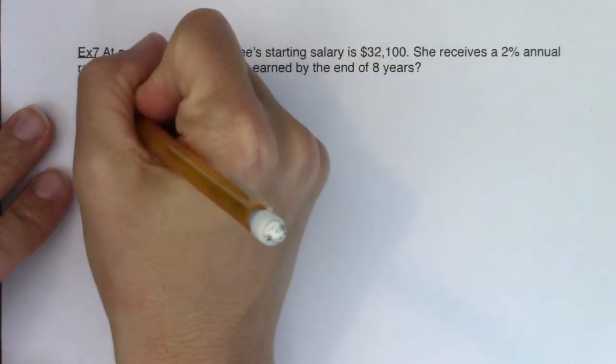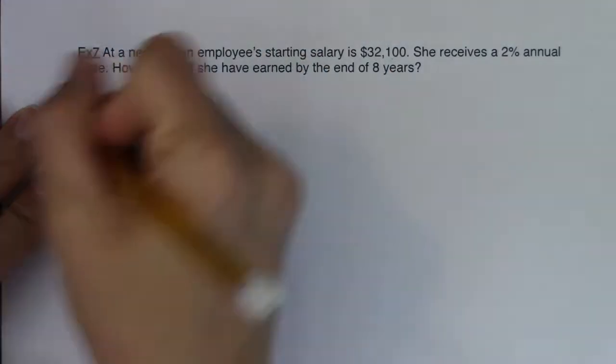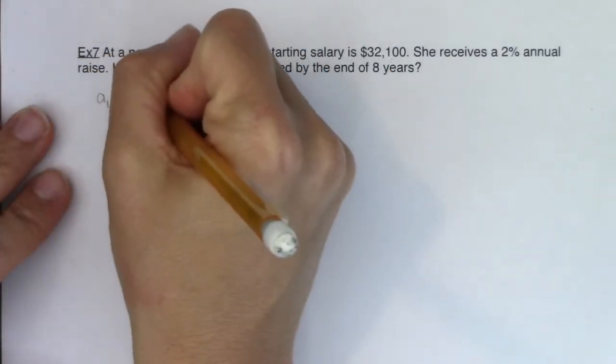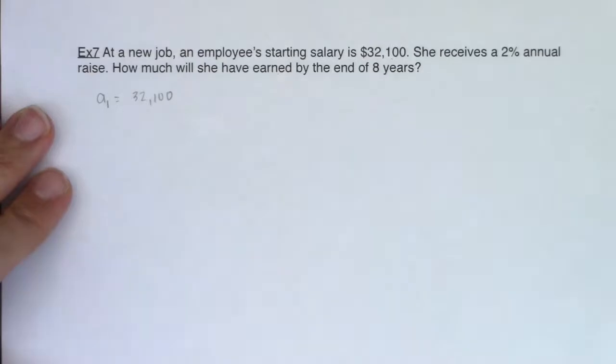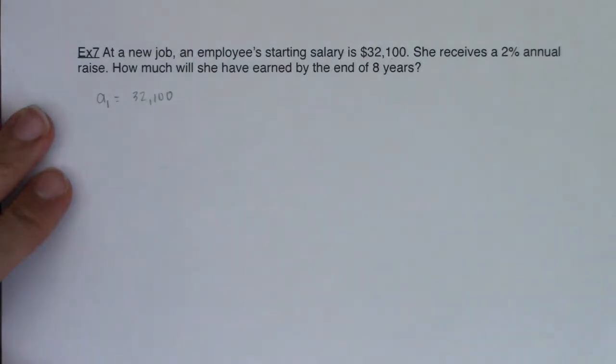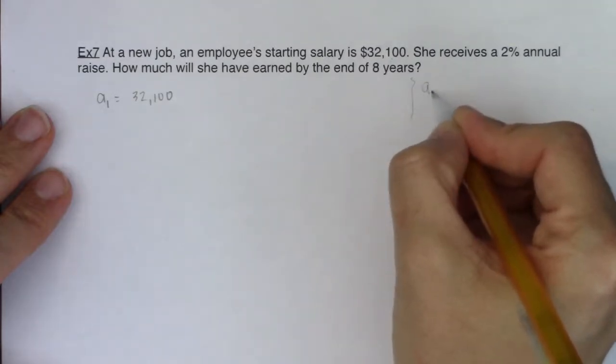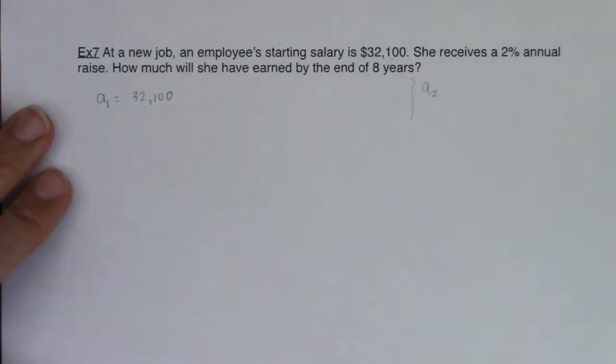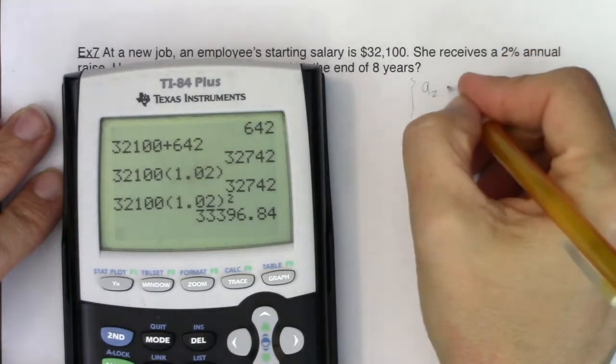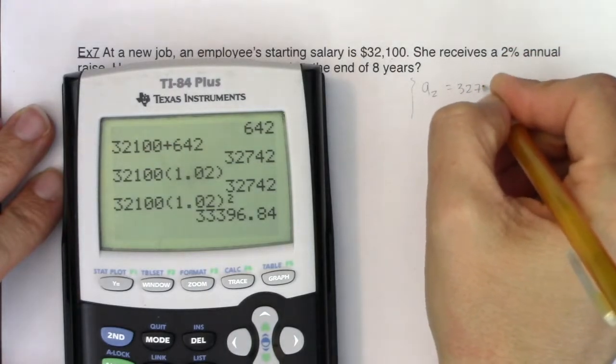So we still want our initial value and that would be in this case, the 32,100. This is the first term in a geometric sequence. If I wanted A sub two, we've actually already found A sub two. A sub two would have been $32,742.